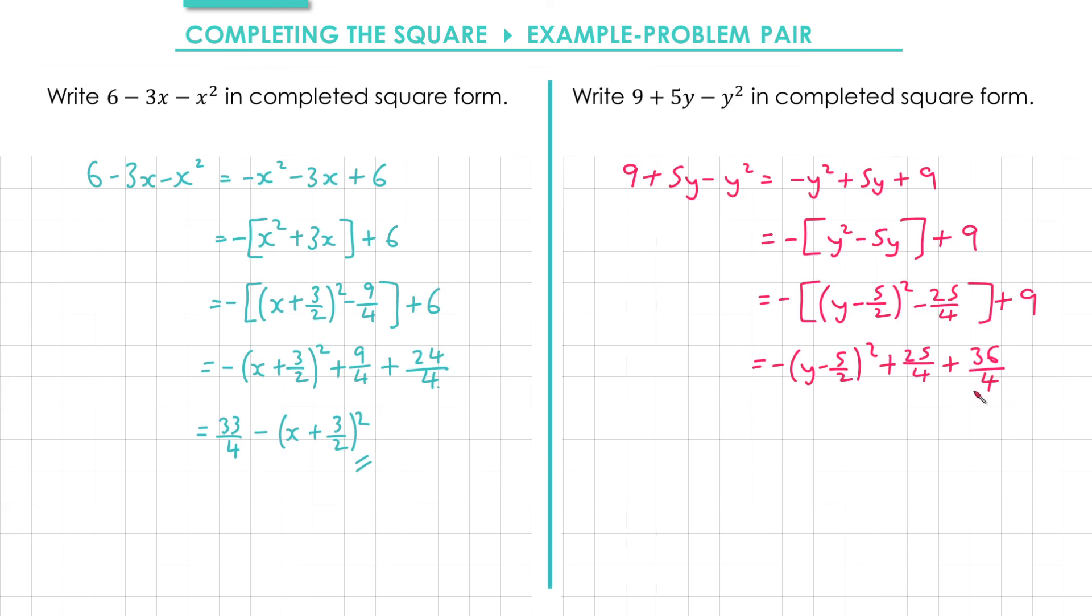As in the last example, we have a positive term which we can move to the front. 25 over 4 plus 36 over 4 gives me 61 over 4. And that's our answer.